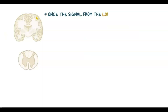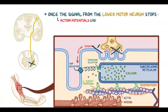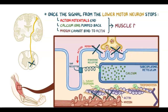Once the signal sent from the lower motor neuron stops and the action potentials end, everything comes to a halt. Calcium ions are pumped back into the sarcoplasmic reticulum by calcium pumps that use ATP. When calcium falls, the C subunit of troponin is no longer bound to calcium, so troponin returns to its original shape. That allows tropomyosin to cover up the active sites on actin once more. As a result, the myosin heads can no longer bind to actin, and the muscle relaxes.